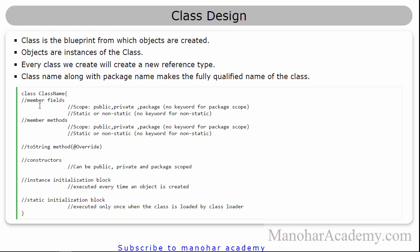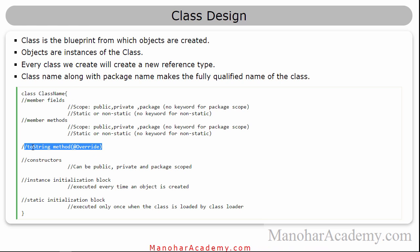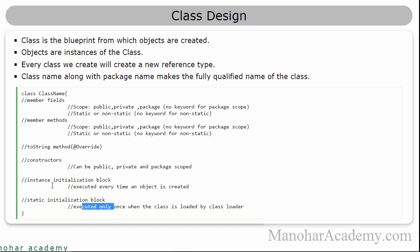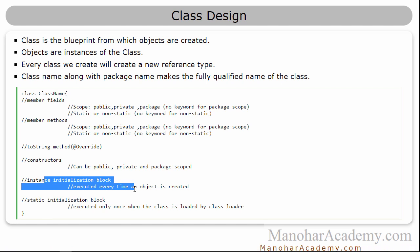We have also seen a special method called the toString method. Even though you don't define it, it is still there. We changed it to get the required behavior — in other words, we overridden that method. We will see the toString method in the next module in more detail. We also have constructors, which can be public, private, or package scope, and which help us create objects with some initial state. We have looked at instance initialization blocks and static initialization blocks. The static initialization block executes only once when the class is loaded by the class loader, but the instance initialization block executes every time an object is created. We don't use instance initialization blocks often, but we will use static initialization blocks to give initial values to static fields.